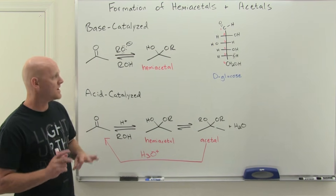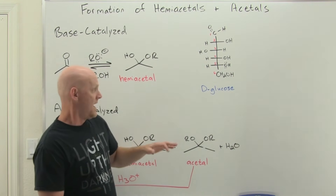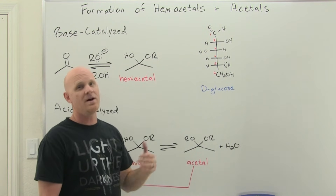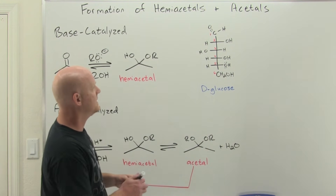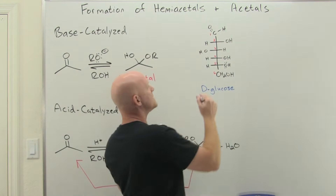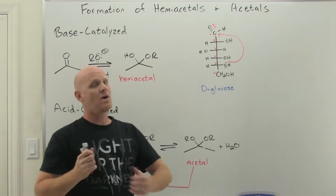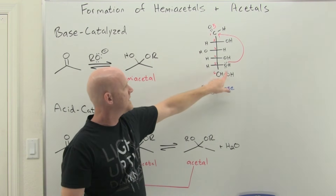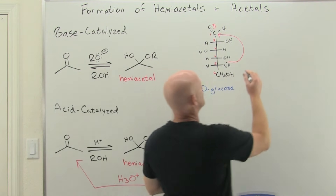Before we get to that, let's talk about biological relevance. This is D-glucose — the most common sugar in your body and the one most studied in biochemistry. This is the linear form represented with a Fischer projection. In solution, whether slightly acidic or basic, it often cyclizes to form a hemiacetal. The oxygen on carbon 5 acts as the nucleophile, attacking the carbonyl carbon of the aldehyde at carbon 1, pushing the pi electrons up to that oxygen — exactly the addition of an alcohol to an aldehyde to form a hemiacetal.